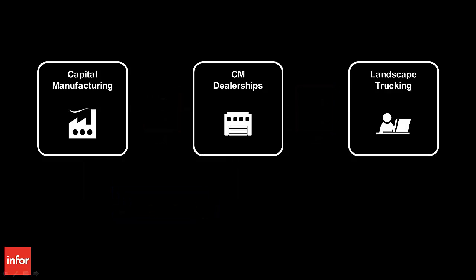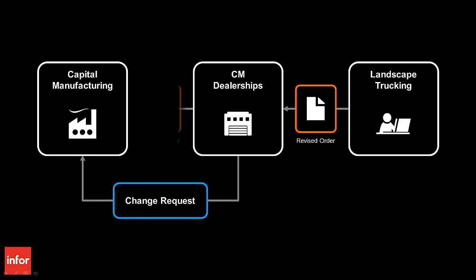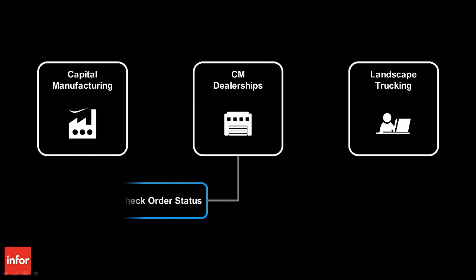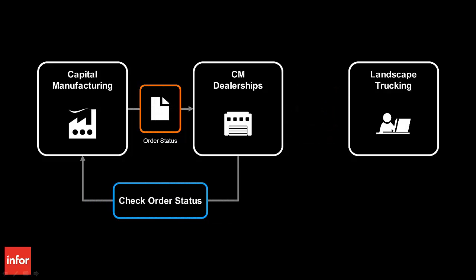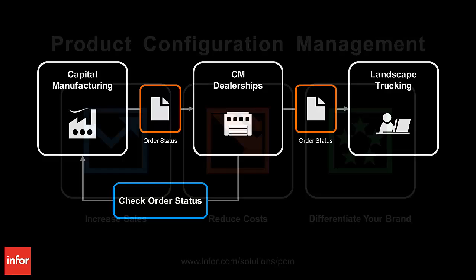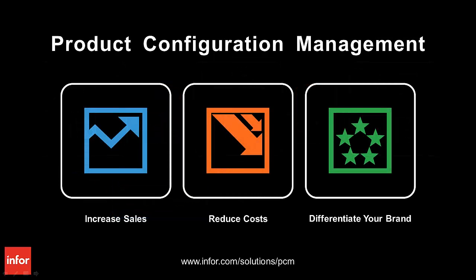We also saw how Capital Manufacturing responded to a change request and a special request from CM Dealerships, generating an updated price, bill of materials, routing instructions, and manufacturing drawing. And finally, we saw how Capital Manufacturing provided order status information to CM Dealerships. Now see how Infor Product Configuration Management will drive real value for you by increasing your sales, reducing your cost, and differentiating your brand. As a next step, schedule some time to meet our people, see a detailed demonstration, and talk with our customers.